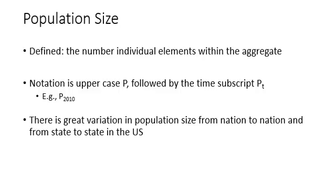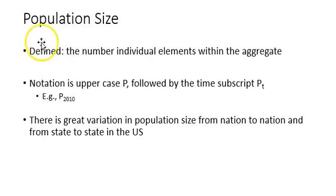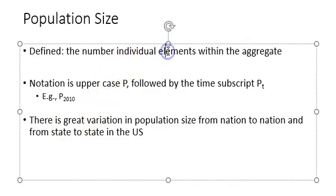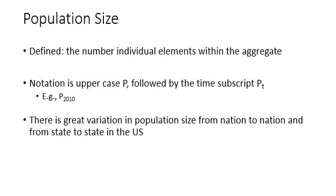A population is defined as the number of individual elements within the aggregate. That could be a population of humans, as we are focusing on primarily, or it could also be a population of dogs or of books. Individual elements is a broad term that can apply to a lot of different things.